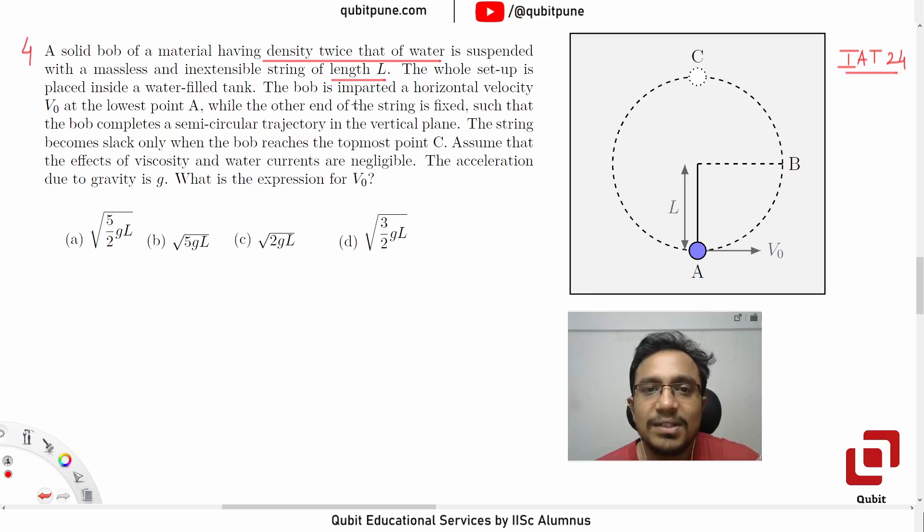The bob is imparted a horizontal velocity V₀ at the lowest point A, while the other end of the string is fixed, such that the bob completes a semi-circular trajectory in the vertical plane.